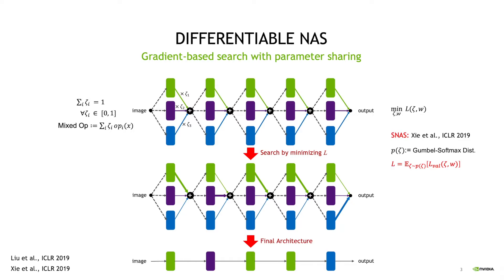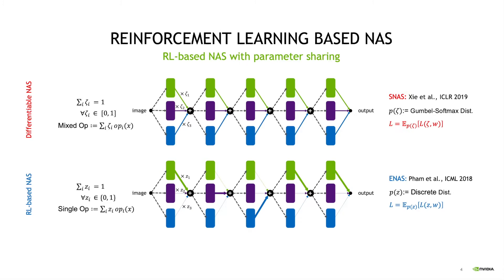There exist different approaches to represent the coefficients. Here, we consider SNAS that uses a Gumbel Softmax distribution to represent the distribution over mixing coefficients. The mixing coefficients in differentiable NAS are in fact a continuous relaxation of categorical one-hot selection parameters, z's in the figure, that select an operation per layer.